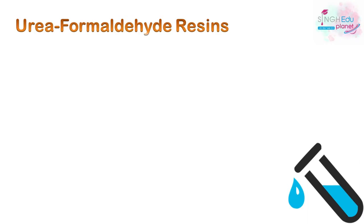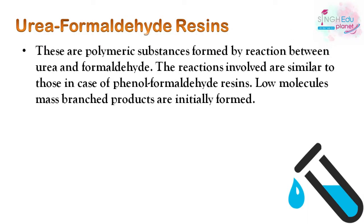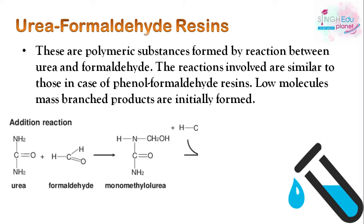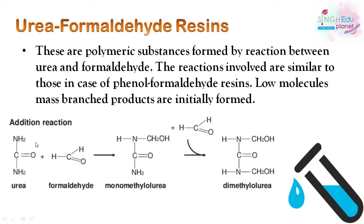Next we have urea formaldehyde resins. These are polymeric substances formed by the reaction between urea and formaldehyde. The reactions involved are similar to those in the case of phenol formaldehyde resins, and low molecular mass branched products are initially formed.